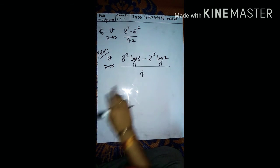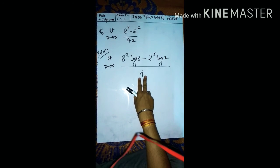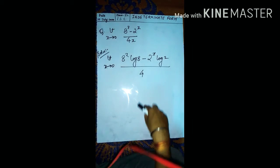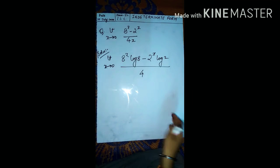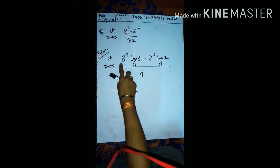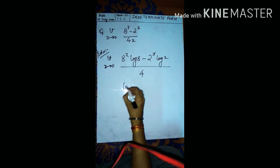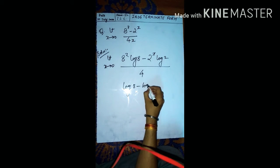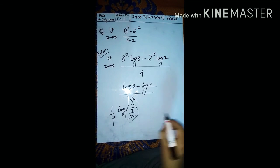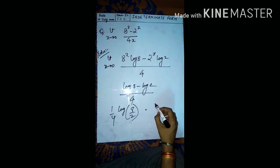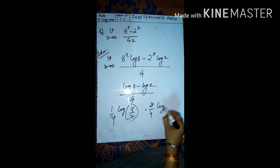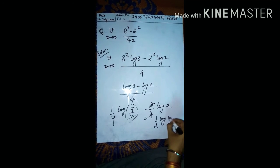The denominator is a single constant term, so we won't get 0 by 0 form again. Apply the limits: 8 to the power 0 is 1 and 2 to the power 0 is 1, giving log 8 minus log 2 upon 4, which equals 1 upon 4 times log(8/2). Log(8/2) is log 4, and since 4 is 2 squared, we write 2 log 2. So the final answer is 2 upon 4 log 2, which simplifies to 1 upon 2 log 2.